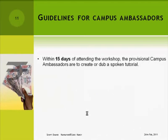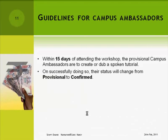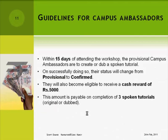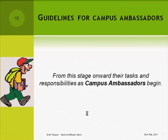Within 15 days of attending the workshop, the provisional campus ambassadors are to create or dub a spoken tutorial. On successfully doing so, their status will change from provisional to confirmed. They will also become eligible to receive a cash reward of Rs. 5,000. This amount is payable on completion of three spoken tutorials, original or dubbed. From this stage onward, their tasks and responsibilities as campus ambassadors begin.